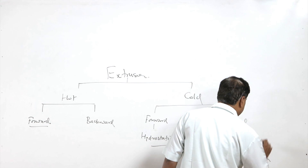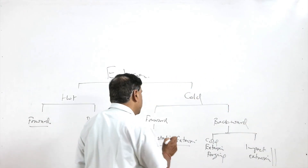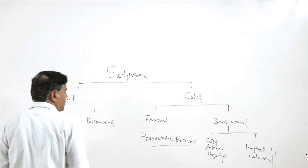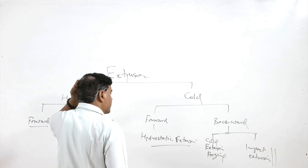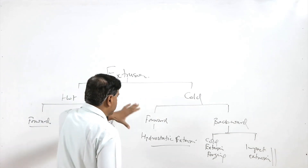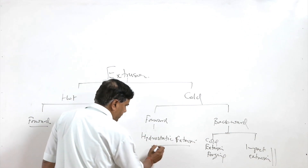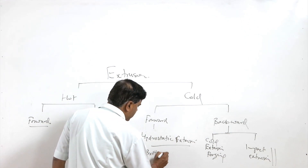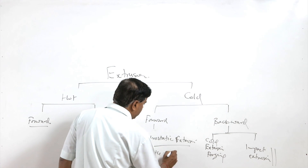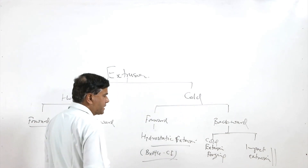Both cold extrusion forging and impact extrusion are backward extrusion processes carried out below the recrystallization temperature. Hydrostatic extrusion is mainly used for brittle materials like cast iron, as it helps to apply uniform pressure.